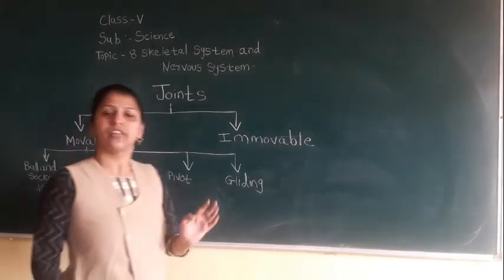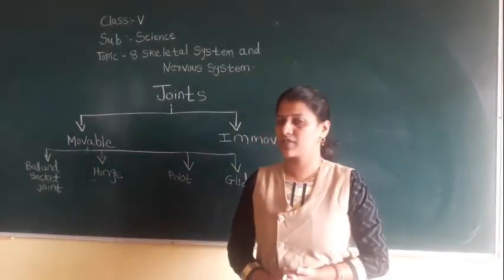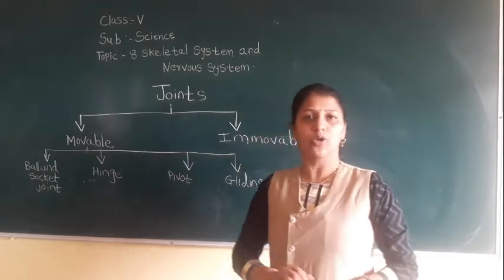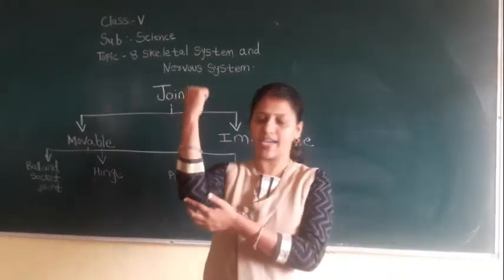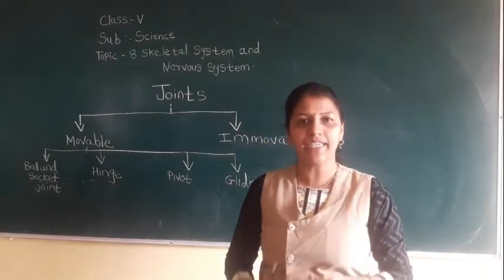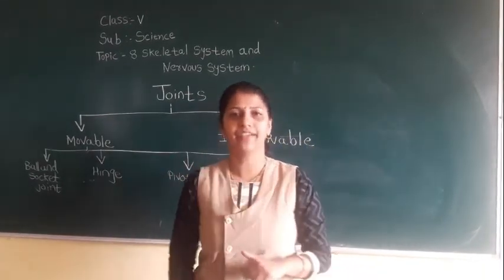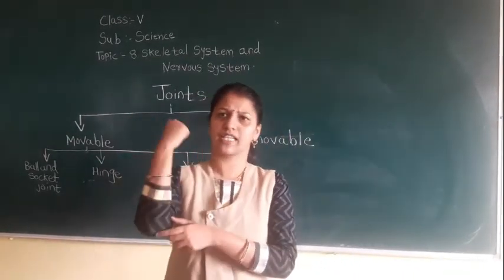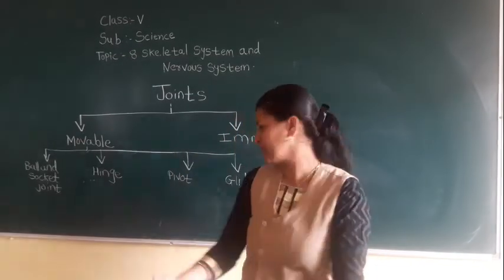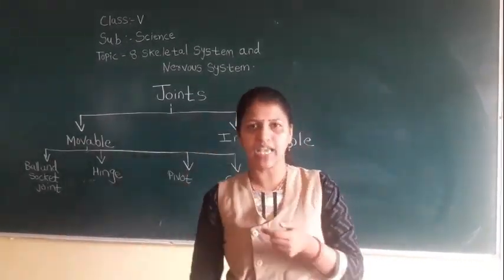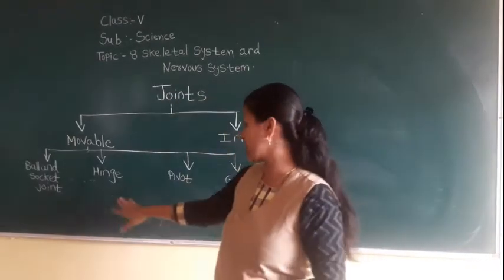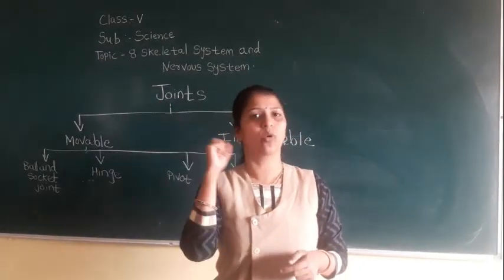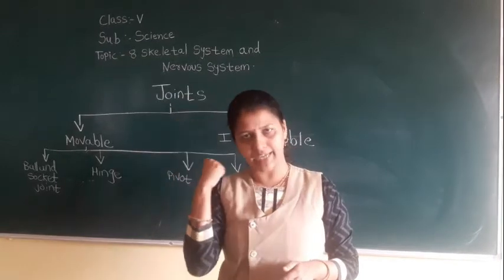The next type is the hinge joint. Just like the hinge on a door, this joint can move in only one direction — up and down. The hinge joint is present in our elbow, knee, and fingers.